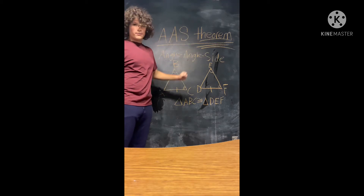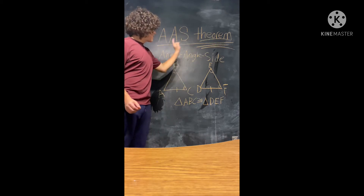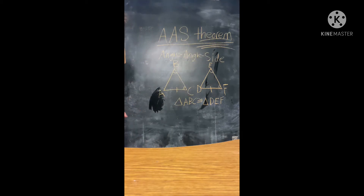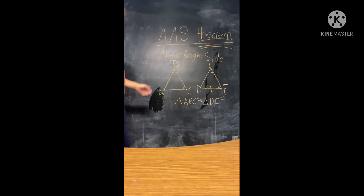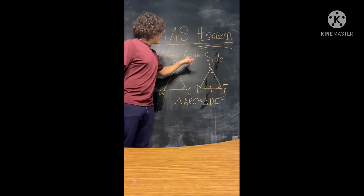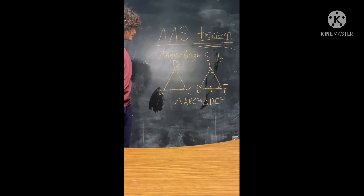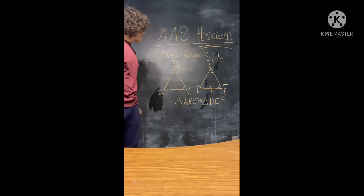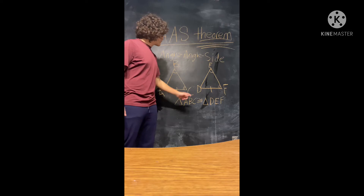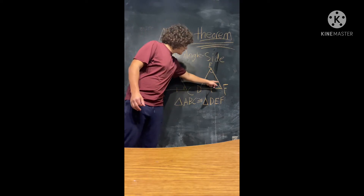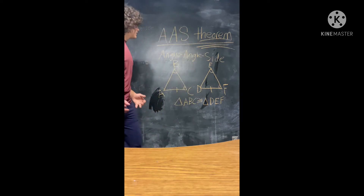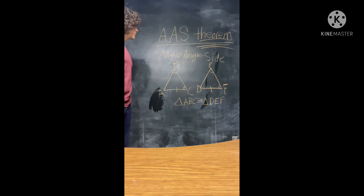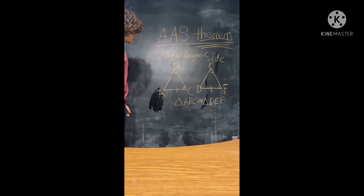A-A-S — it's important to note it's a theorem, not a postulate. A-A-S stands for angle, angle, side. What this looks like is if one triangle has an angle, an angle, and a non-included side, and another triangle has a congruent angle, angle, and non-included side, then those triangles, using A-A-S, can be proven congruent.